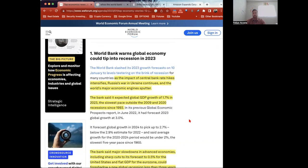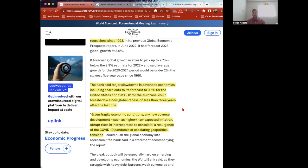So here they go on saying, as the impact of central bank rate hikes intensify, Russia's war in Ukraine continues, and the world's major economies' engines sputter. So basically the Russia and Ukraine war has been ongoing for a long time. Wars are inflationary events. Only reason why the inflationary event hasn't been that bad in terms of inflation is because the Federal Reserve is raising rates extremely fast and that puts a lid on inflation. Why? Because the U.S. has the world reserve currency, the dollar is the dollar wherever you go. So the World Bank is basically saying that they expect, so the bank said major slowdowns in advanced economies including sharp cuts to its forecast of 0.5% for the United States and flat GDP for the Eurozone, could foreshadow a new global recession less than three years after the last one. So basically they're talking about March 2020 when the market crashed.